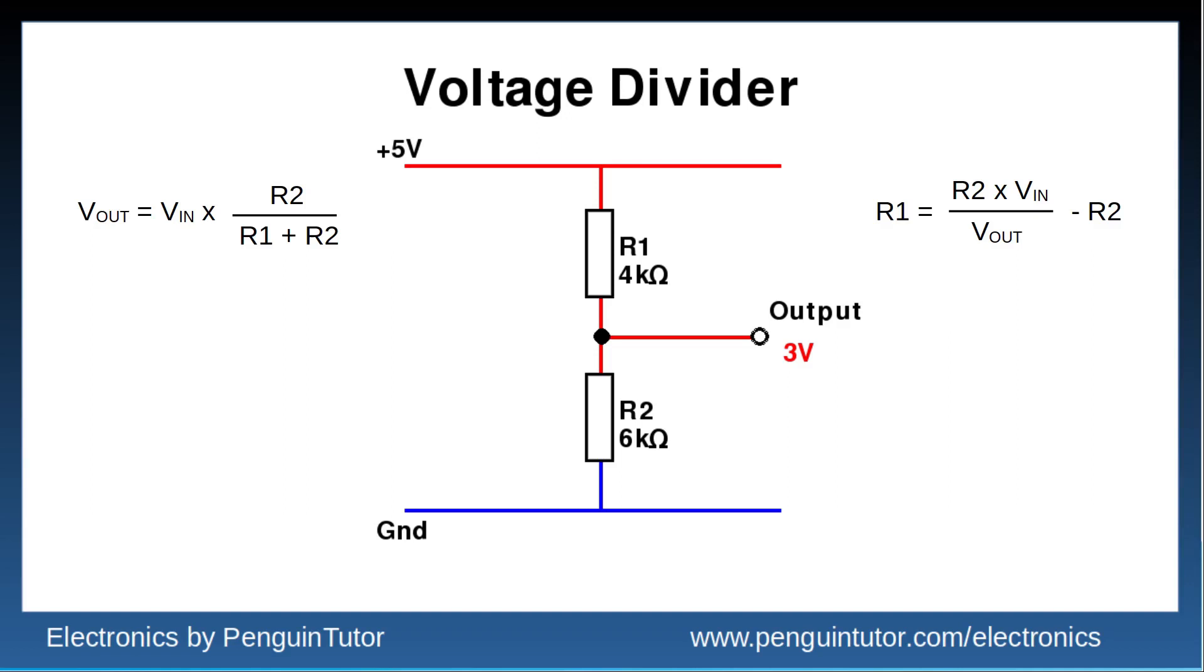If you enjoy math, then here is this formula transposed for R1. So pick a value for R2, say 6 kilo ohms, and then you can use this formula to calculate the value for R1.